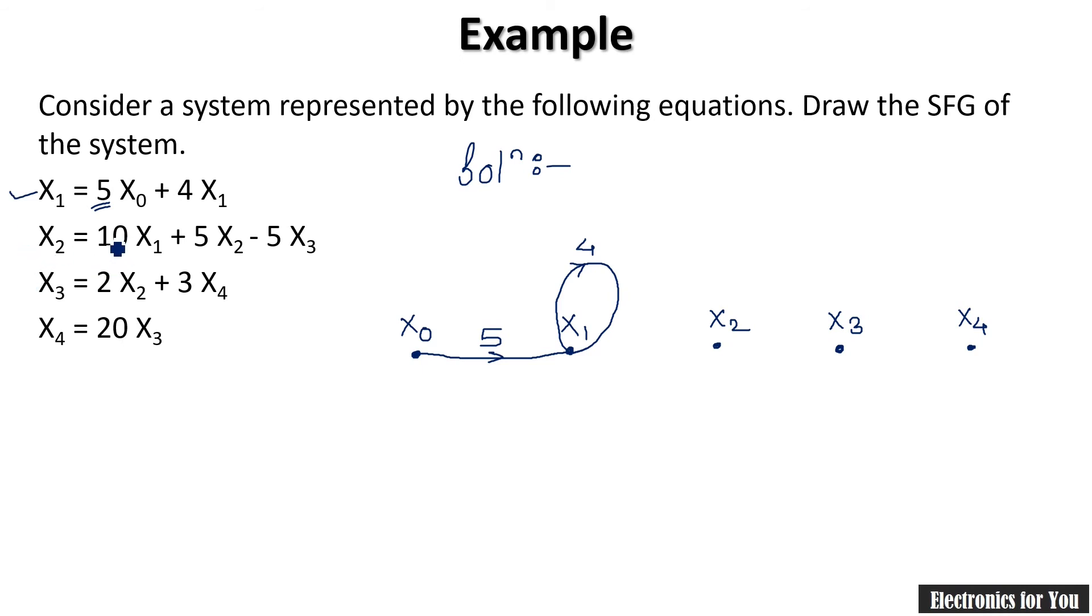Now as x1 is completed, move to the next, that is x2. x2 is 10x1, means you are moving from x1 to x2 with the gain as 10, so it is 10 times x1. Then again 5x2 is there.